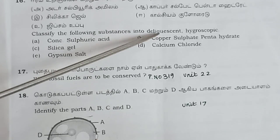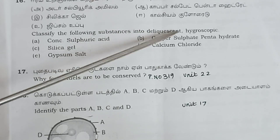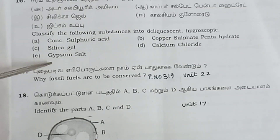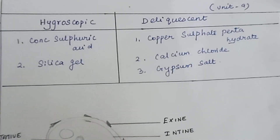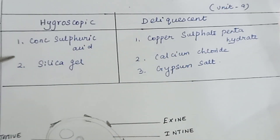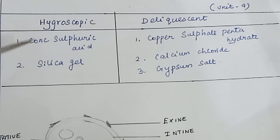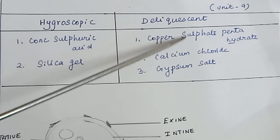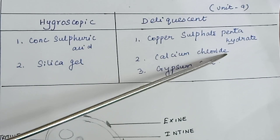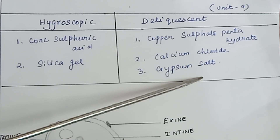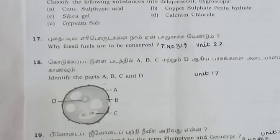Question 16: Classify the following substances into deliquescent and hygroscopic — a very important repeated question. Hygroscopic: concentrated sulfuric acid, silica gel. Deliquescent: copper sulfate pentahydrate, calcium chloride, gypsum, salt.